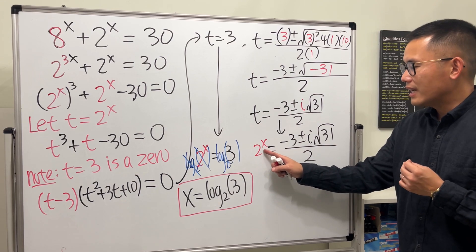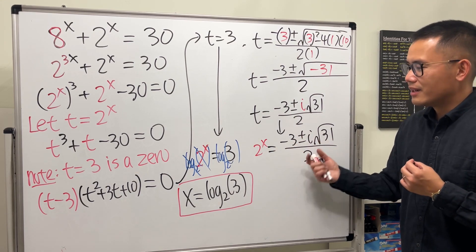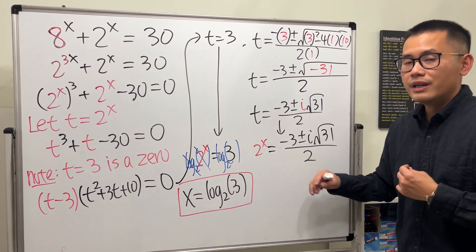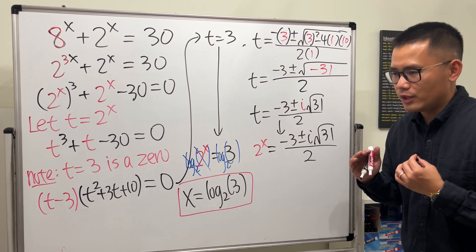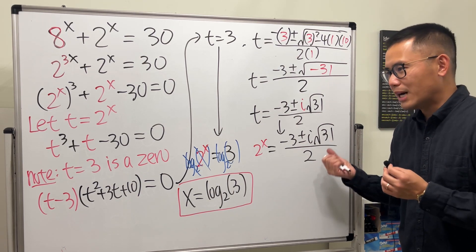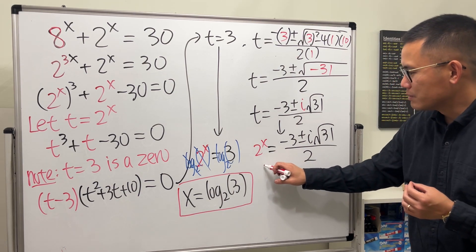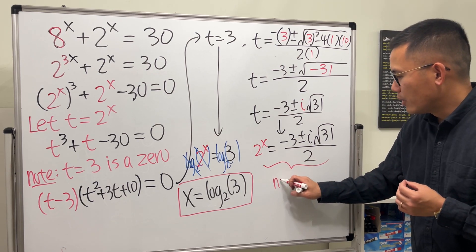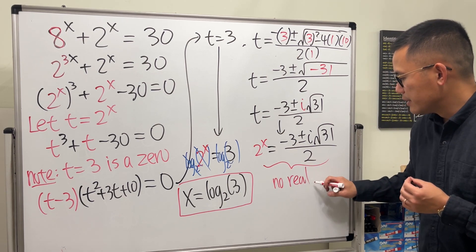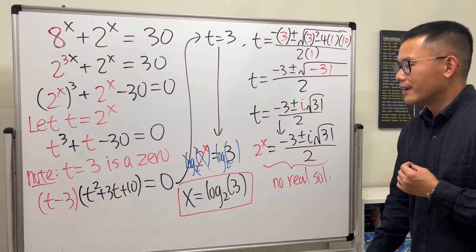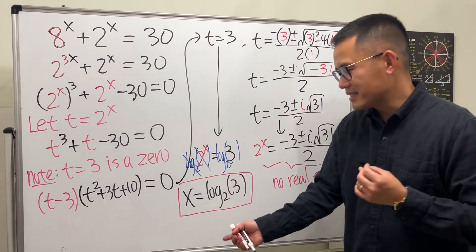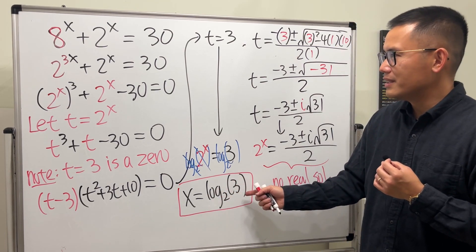That's it. Right here, when you have 2 to the x equals this right here, if you take log base 2, it still makes sense, but not in the real world. You will have to go to the complex world for it. So I will just denote that right here, no real solution. So I'm just going to present this to you guys, log base 2 of 3 for the answer for that.